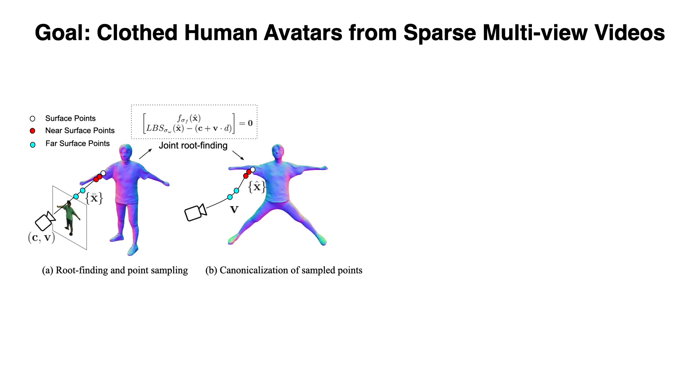The proposed joint root-finding algorithm enables accurate point sampling around the ISO surface for volume rendering without relying on expensive importance sampling.